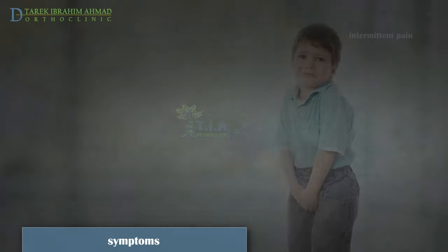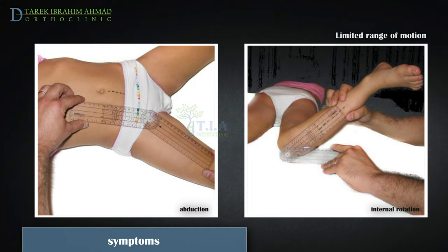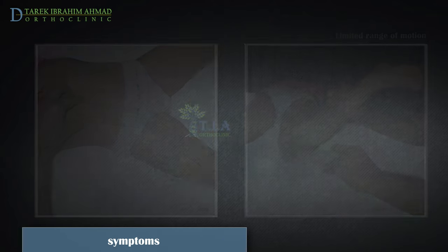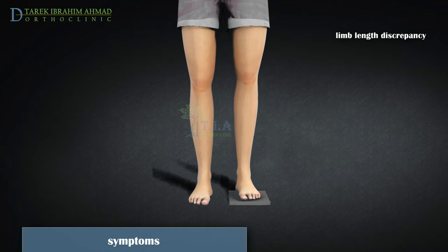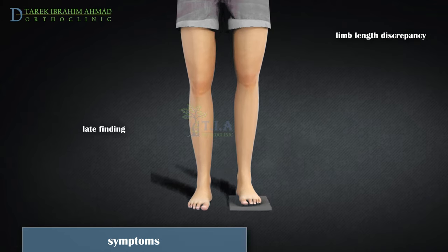Associated stiffness or decreased motion in the hip joint, especially internal rotation and abduction, are common findings. Shortening of the affected leg leading to uneven leg length is a late finding.